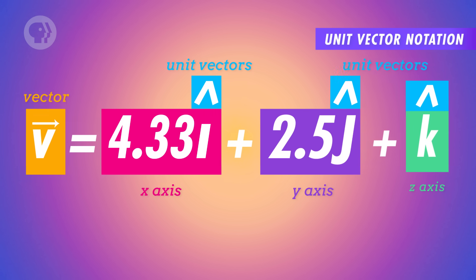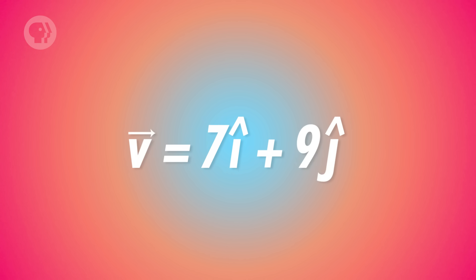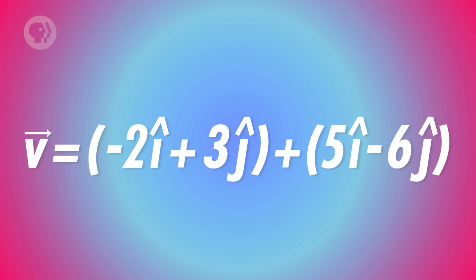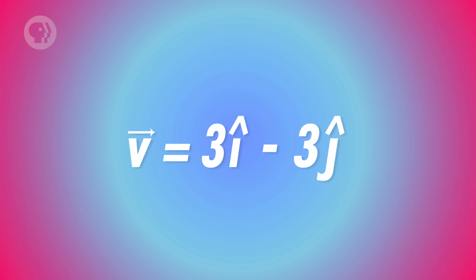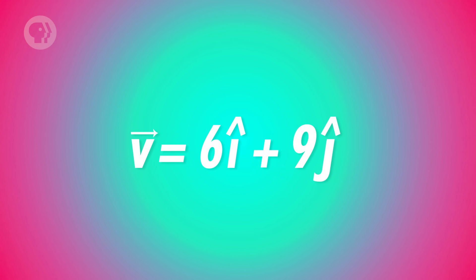You'll sometimes see another one, k̂, which represents the z-axis. And if we wanted to add or subtract two vectors, that's easy enough — we just separate them each into their component parts and add or subtract each component separately. So 2î + 3ĵ added to 5î + 6ĵ would just be 7î + 9ĵ. And -2î + 3ĵ added to 5î - 6ĵ would be 3î - 3ĵ. Multiplying by a scalar isn't a big deal either — you just multiply the number by each component. So 2î + 3ĵ times 3 would be 6î + 9ĵ.